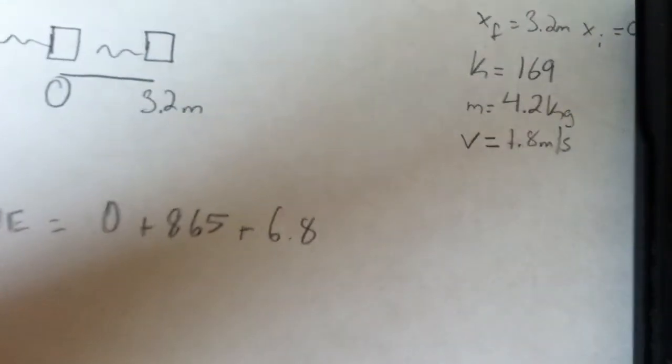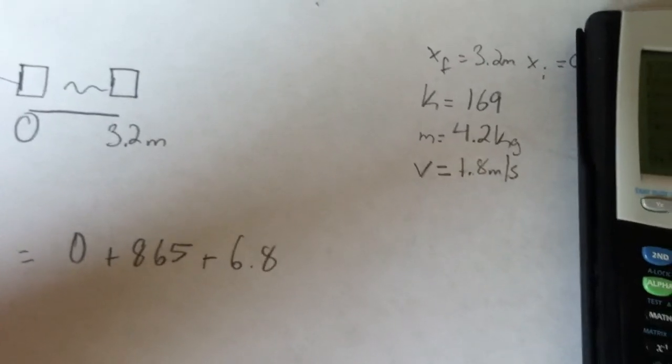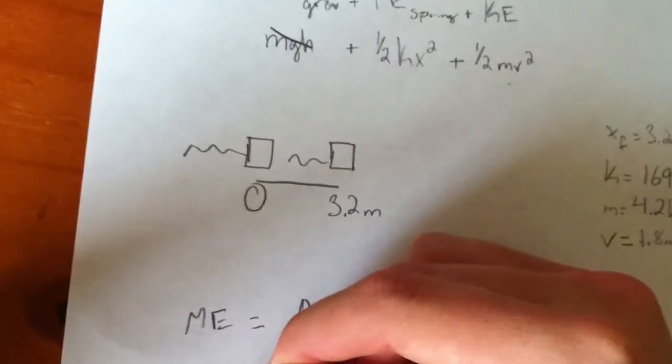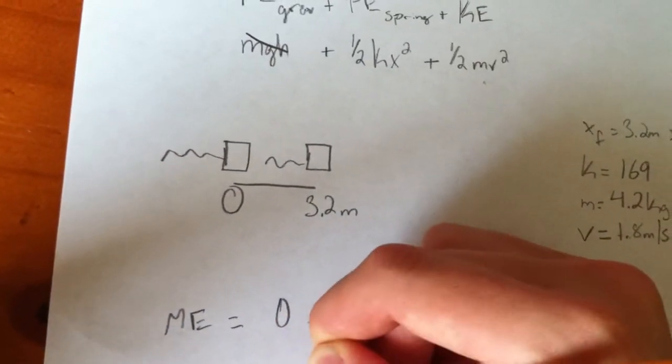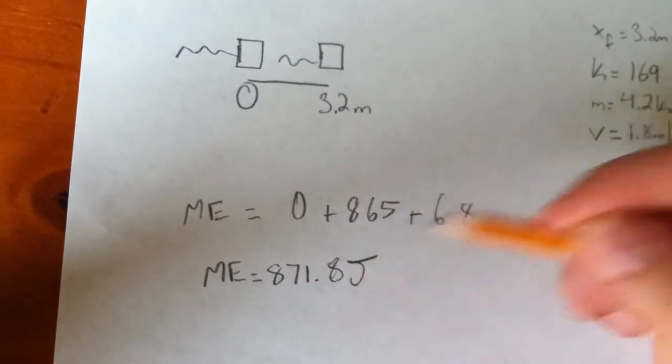Now, I'll just add them. 6.8 plus 865 equals 871.8. So, the mechanical energy equals 871.8. And that is our answer. Joules. Thank you.